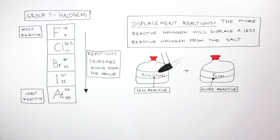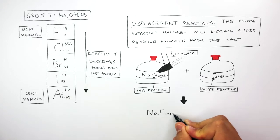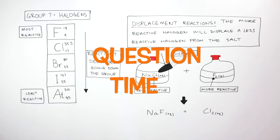fluorine will kick out chlorine from the salt. In other words, fluorine displaces chlorine from the salt. The products are sodium fluoride and chlorine. It's question time - attempt these questions to check your understanding.